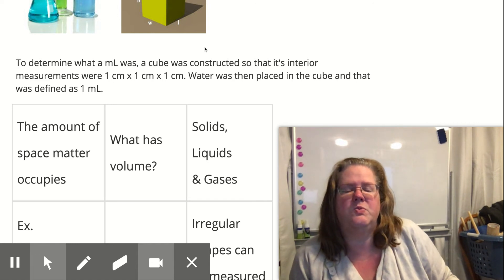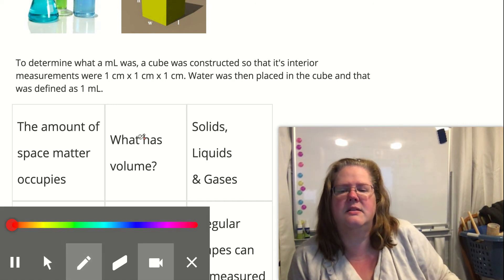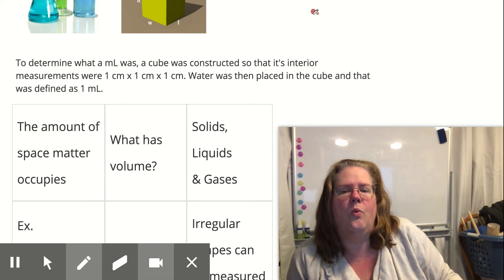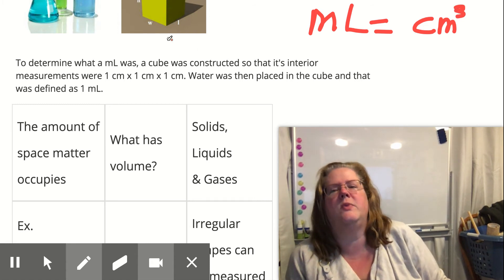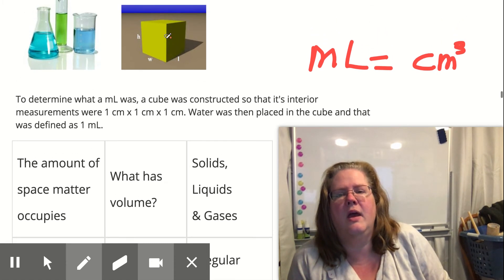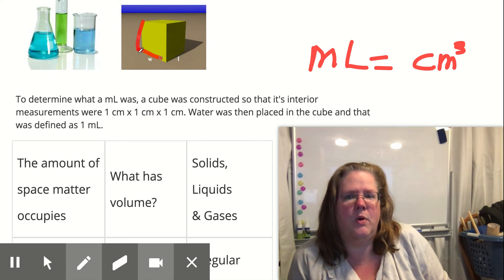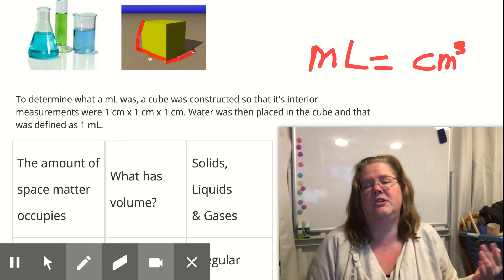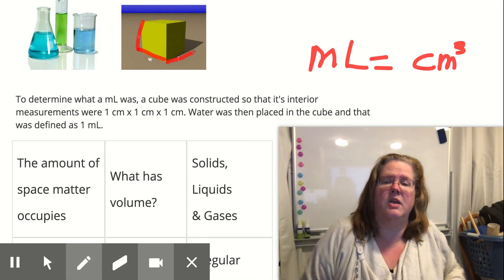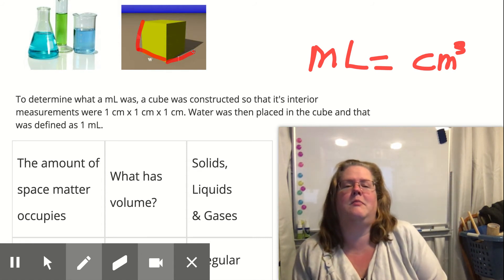Now, this is what's really interesting. One milliliter is equal to one cubic centimeter. Because that's how we defined what a milliliter was. We actually took a cube, and we made it 1 mm × 1 mm × 1 mm on the interior, and filled it up with water. And we said that's the definition of a milliliter. So a cubic centimeter is the same as a milliliter.